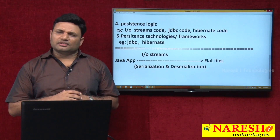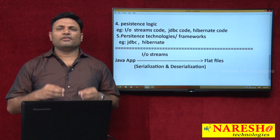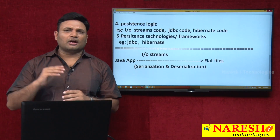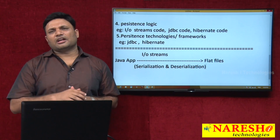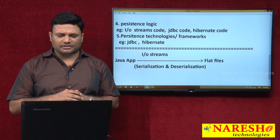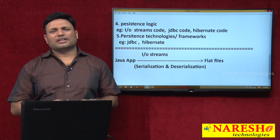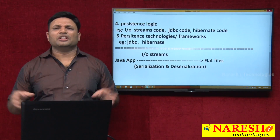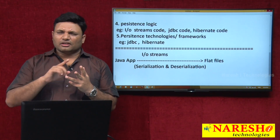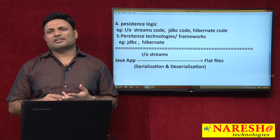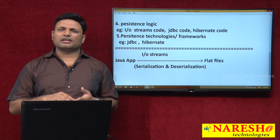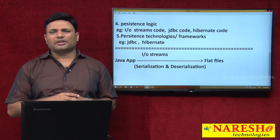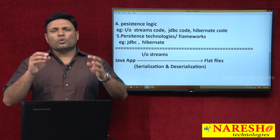Deserialization is reading data from a file and constructing an object having that data. So the writing process is serialization and the reading process is deserialization. However, files have many limitations as persistence stores — no security, no standard SQL support, and we cannot work with constraints like unique key, primary key, or foreign key constraints. So we never prefer files as persistence stores in large-scale applications.